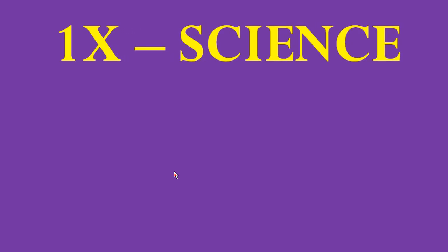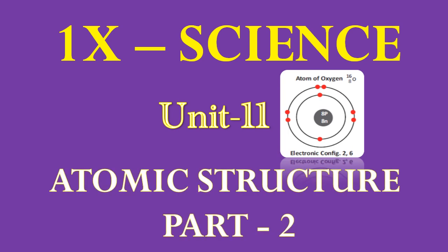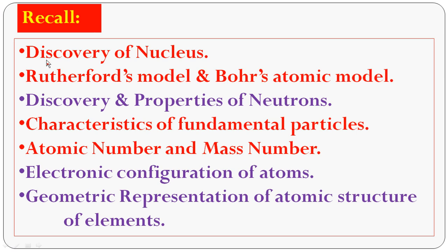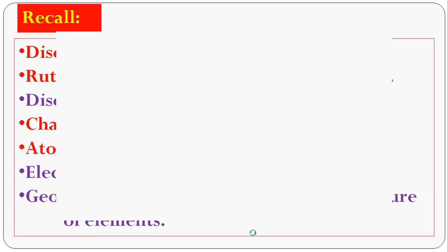Good morning students. Welcome back to 9th Science, Unit 11, Atomic Structure. I hope you remember our previous class. Let us recall: Discovery of Nucleus, Rutherford Model and Bohr Atom Model, discovery and properties of neutrons, characteristics of fundamental particles, atomic number and mass number, electronic configuration of atoms, and geometric representation of atomic structure of elements. Now we come to the new topic in this lesson: Valence Electrons.